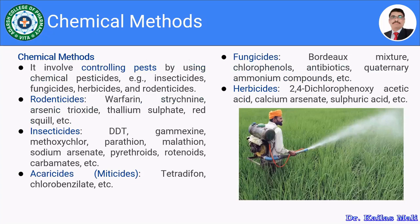Let us move towards the chemical method. In the case of chemical methods, we are going for rodenticides, insecticides, acaricides, fungicides, and herbicides to manage specific types of pests. It involves controlling pests using chemical pesticides. Rodenticides control rodents — examples include warfarin, strychnine, arsenic trioxide, thallium sulphate, and red squill. These are used to manage pests in the farm as well as the warehouse.